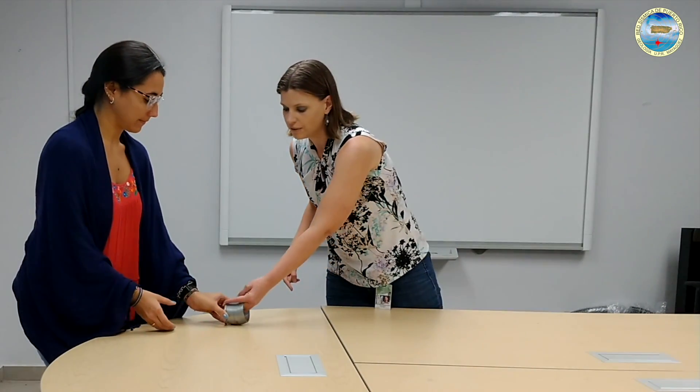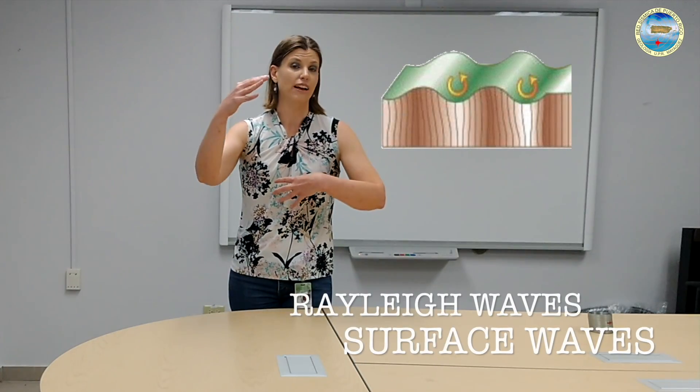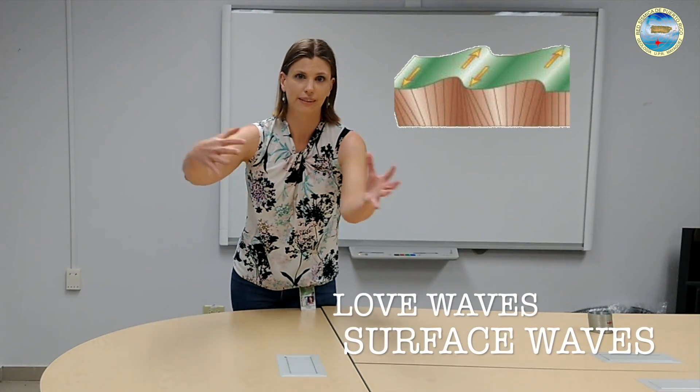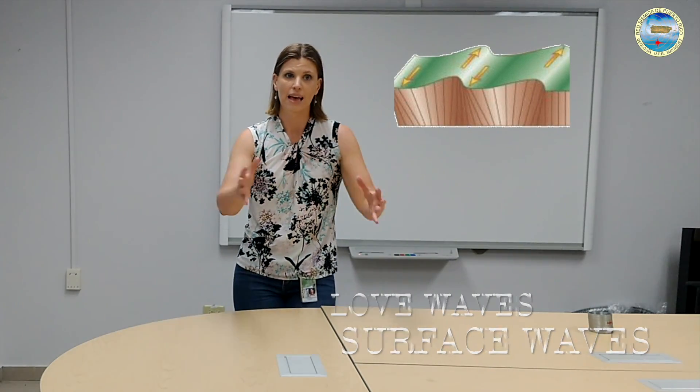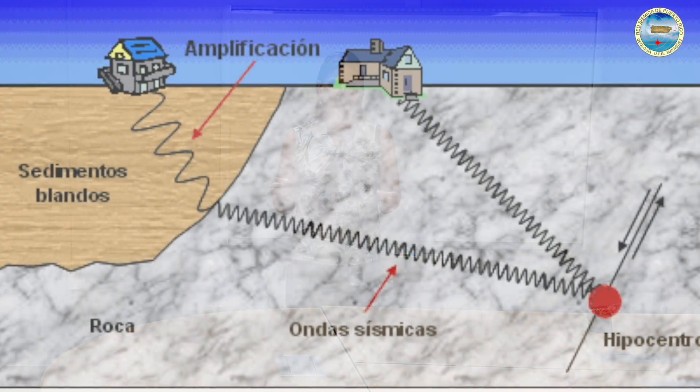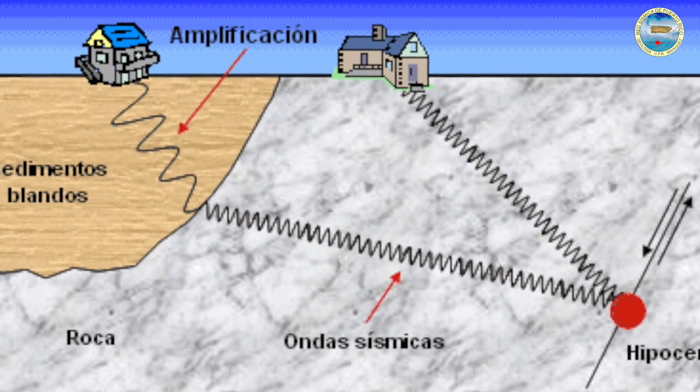Those are two of the waves. The third one is the surface waves. These waves are two different types — they move like ocean waves, and there are Love waves, which are kind of like shear waves moving back and forth. The reason we care about surface waves is because they usually have the largest amplitudes, and therefore they're the ones that are most felt and most destructive.